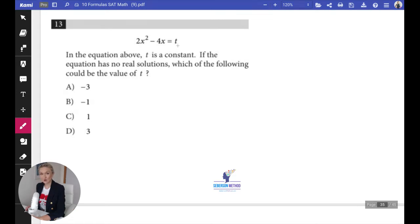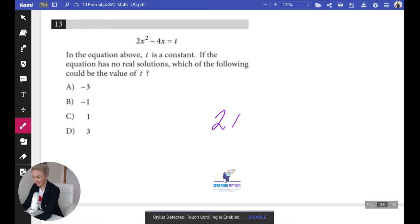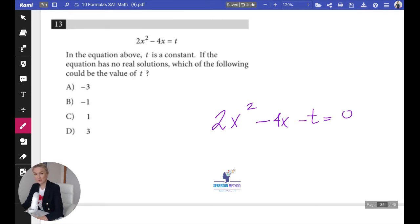The first thing I would do is I would transfer t over to the inside, so my equation would look like this: 2x² - 4x - t, and all of that is equal to zero.